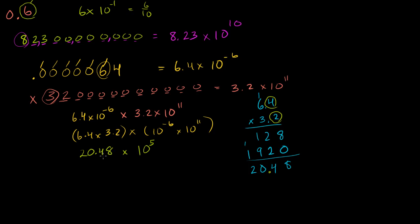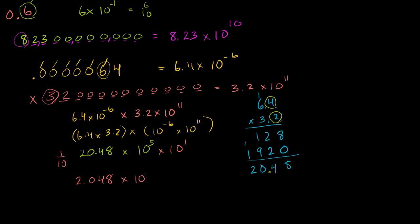But the next question is: is this in scientific notation? If you wanted to be a real stickler about it, it's not, because 20.48 could be simplified. We can divide this by 10 and multiply that side by 10 — that shouldn't change the number. So if you divide 20.48 by 10, you get 2.048, and you multiply 10 to the fifth by 10, which gives times 10 to the sixth.